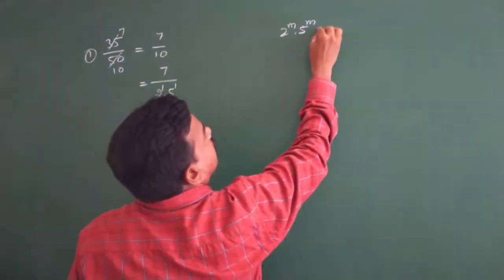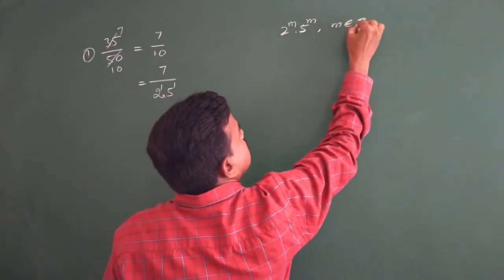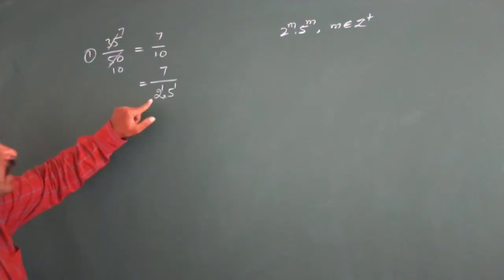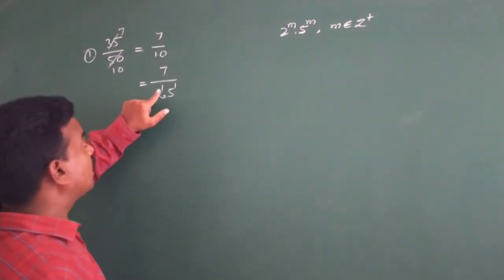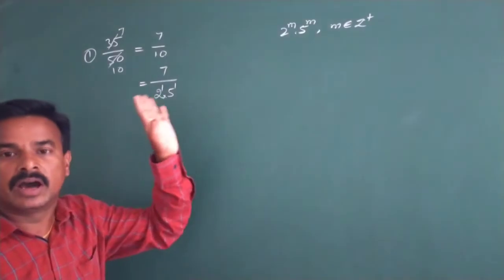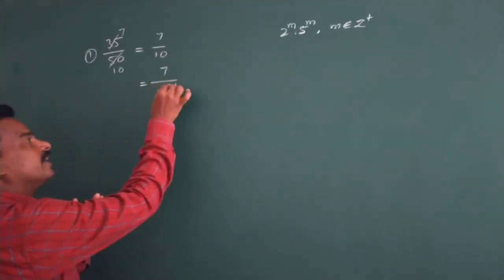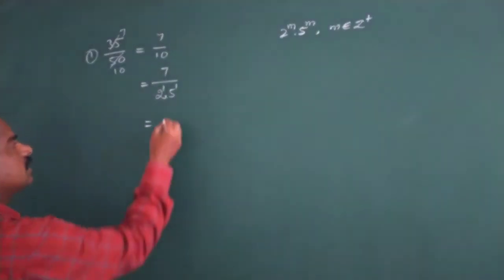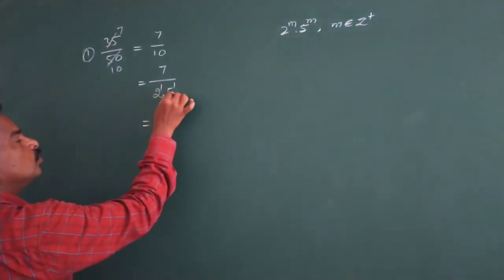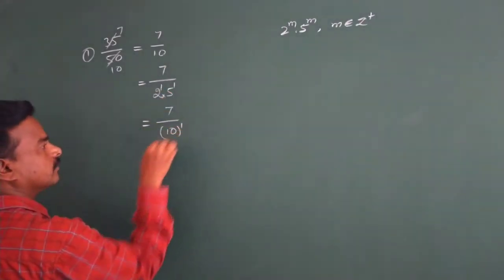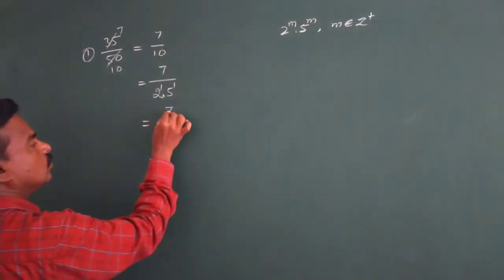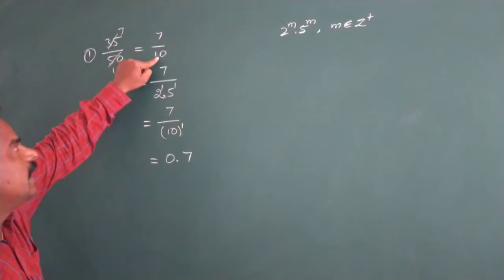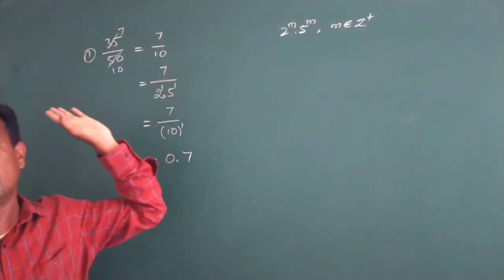When we find the powers of 2 and 5 are equal, what is the power here? It is 1. So directly we can write that 7 by 2 to the power of 1 into 5 to the power of 1 equals 7 by 10, which equals 0.7. Of course, 7 by 10 is equal to 0.7 directly, but for other examples we need to follow these steps.